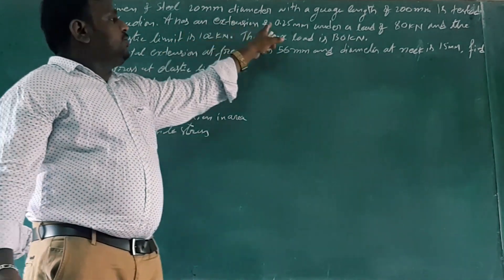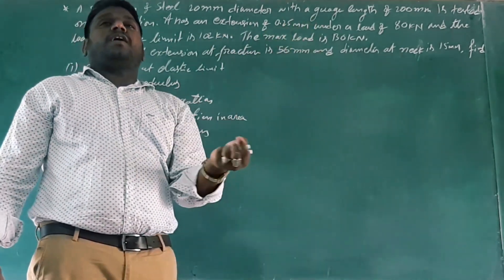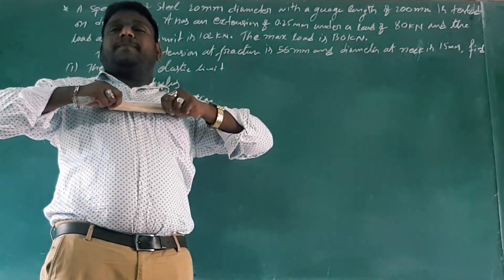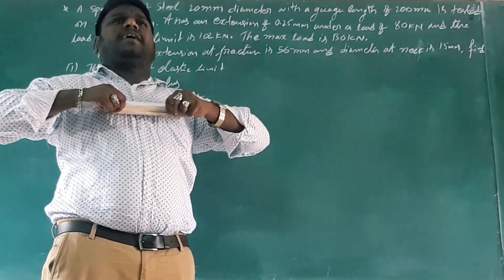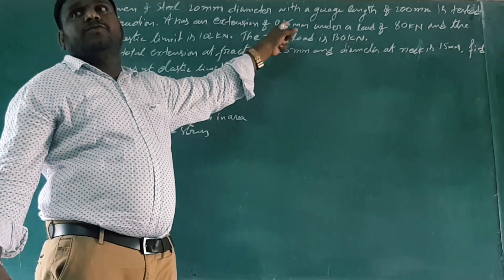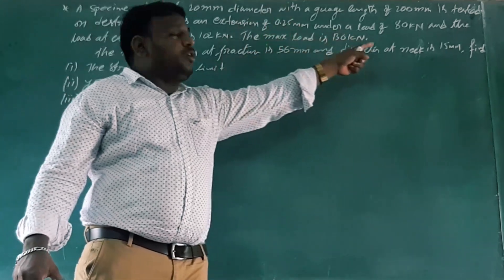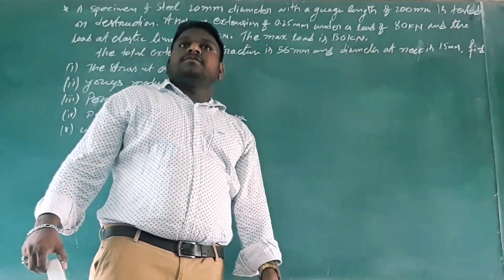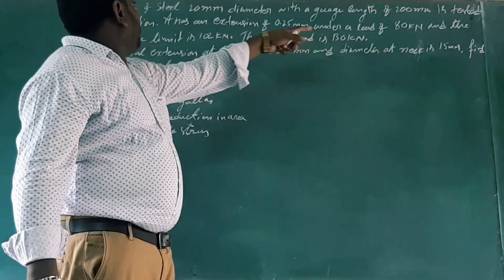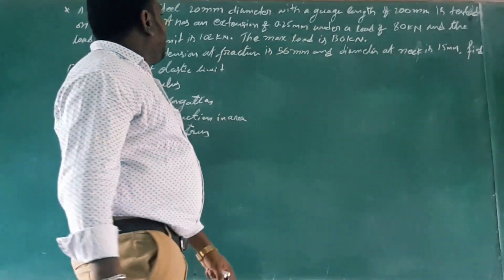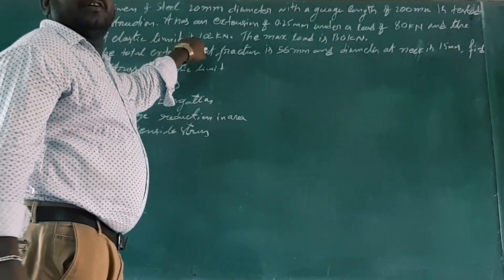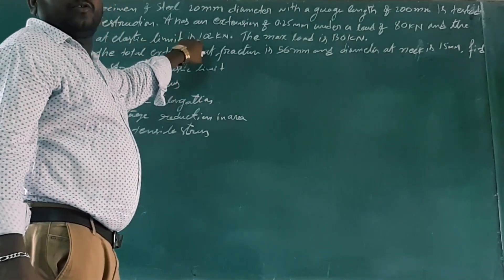The extension is 0.25 mm, which is 1 mm divided by 4. At the proportional limit, the load is 80 kilonewtons and the extension is 0.25 mm. The load at the elastic limit is 102 kilonewtons.